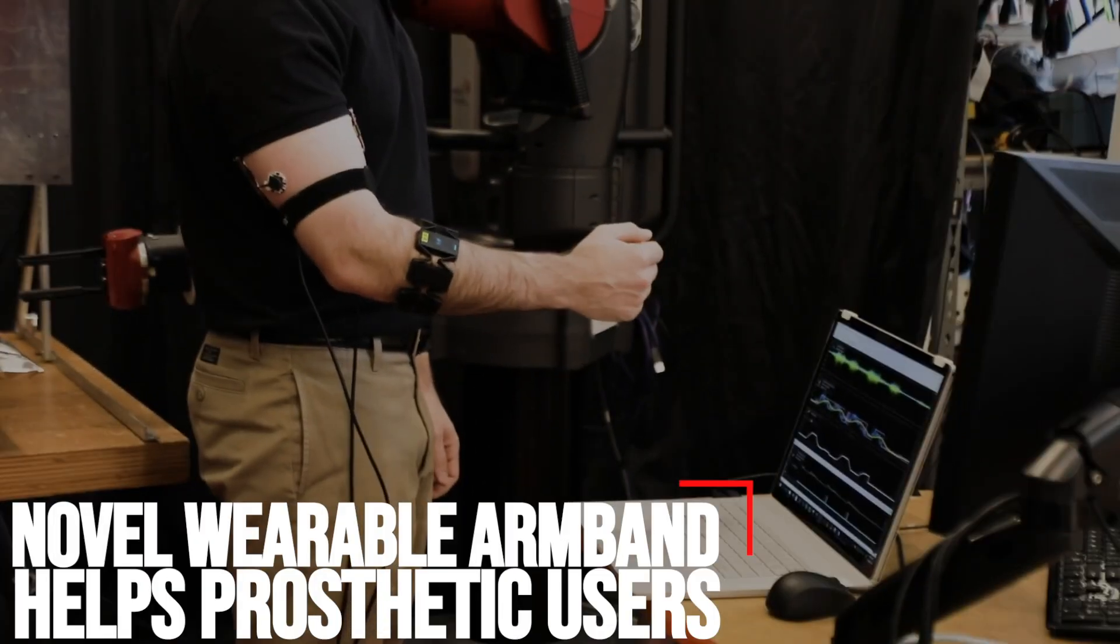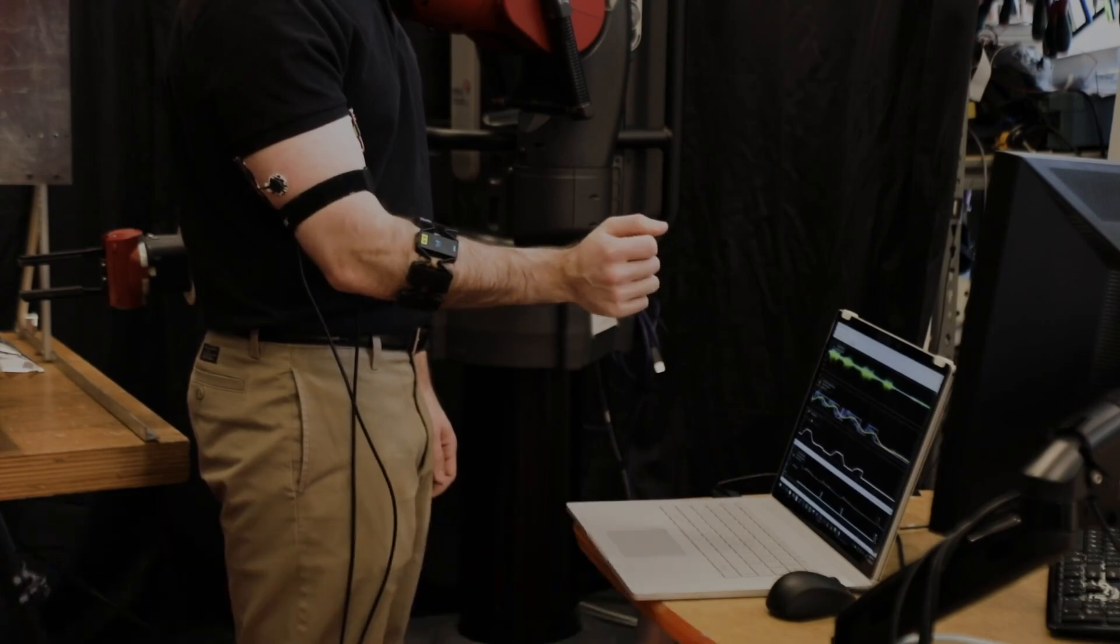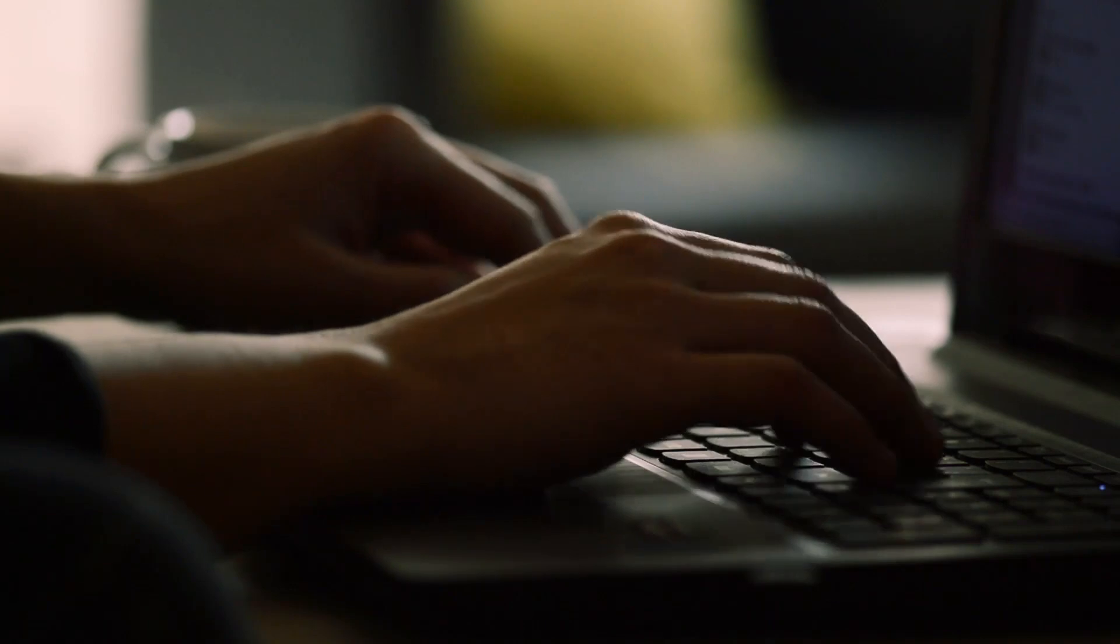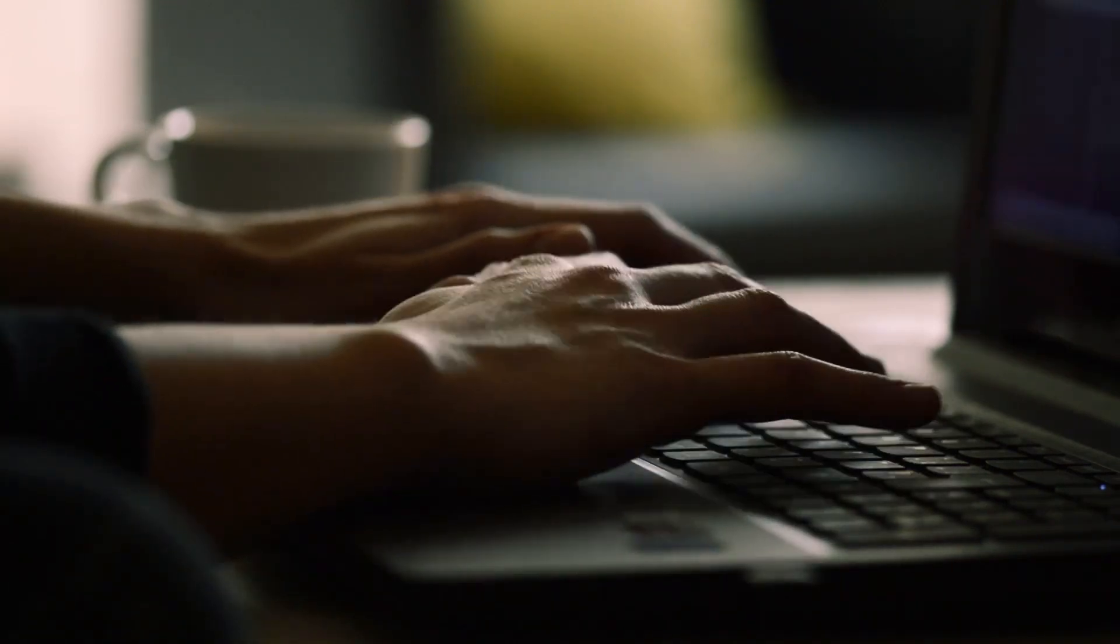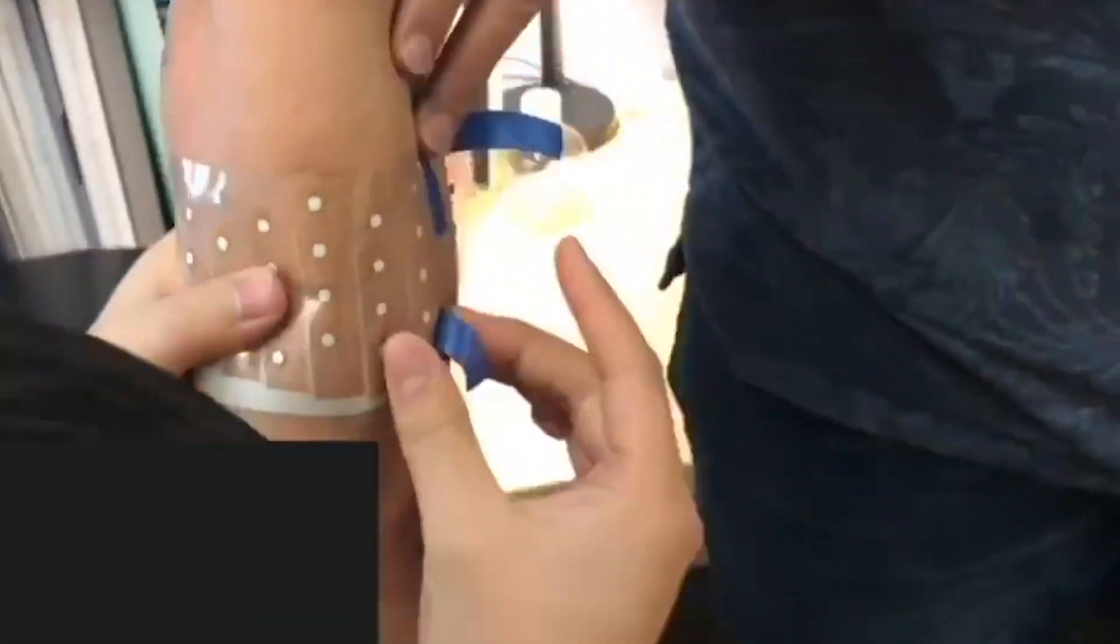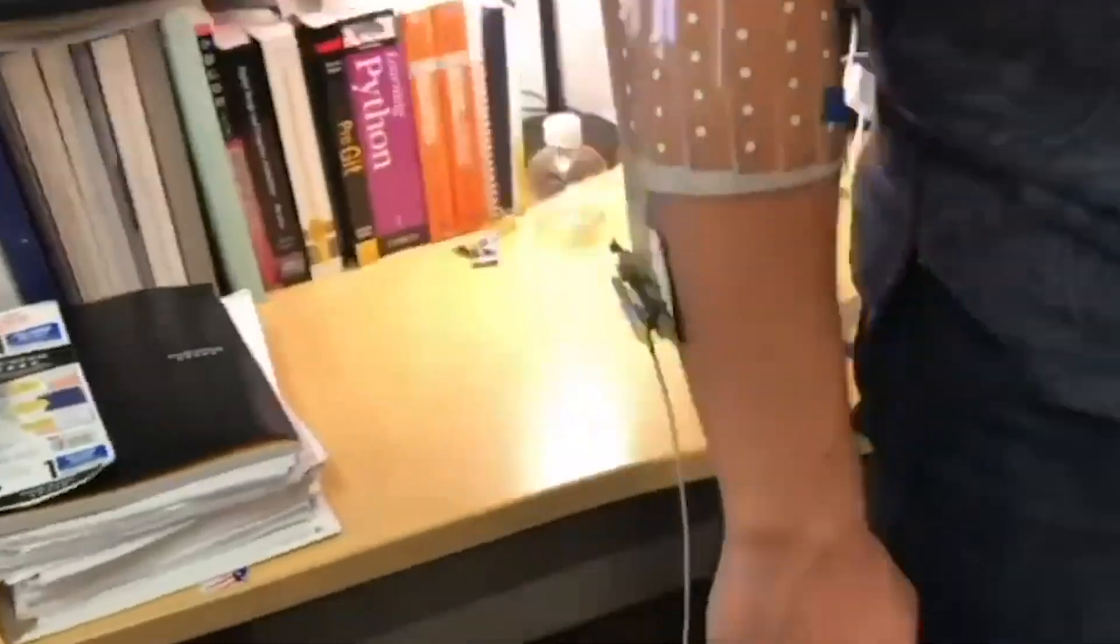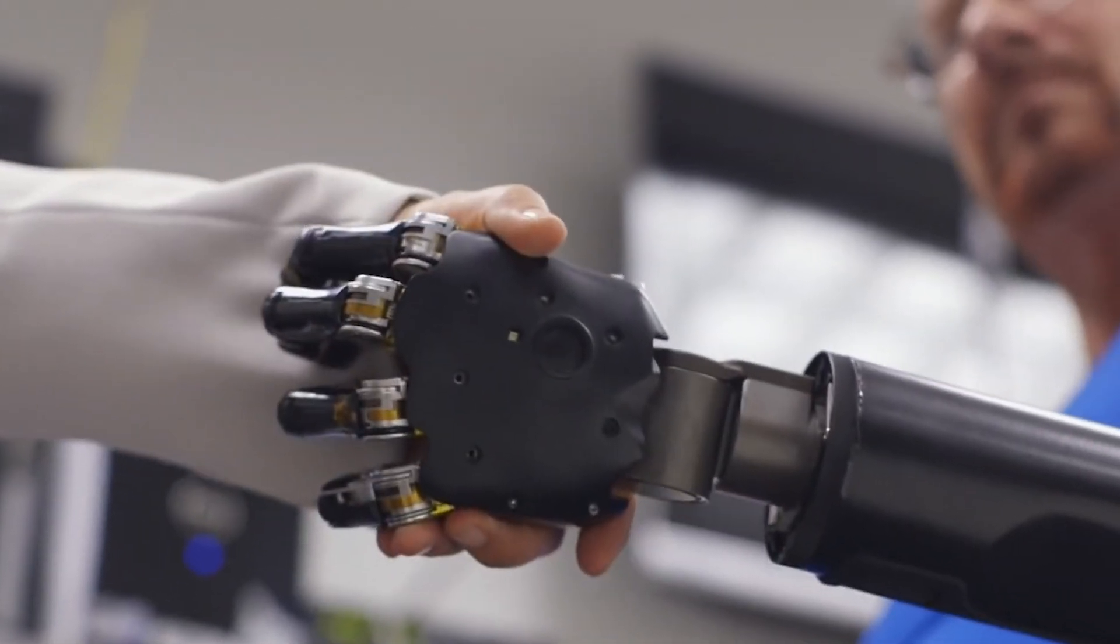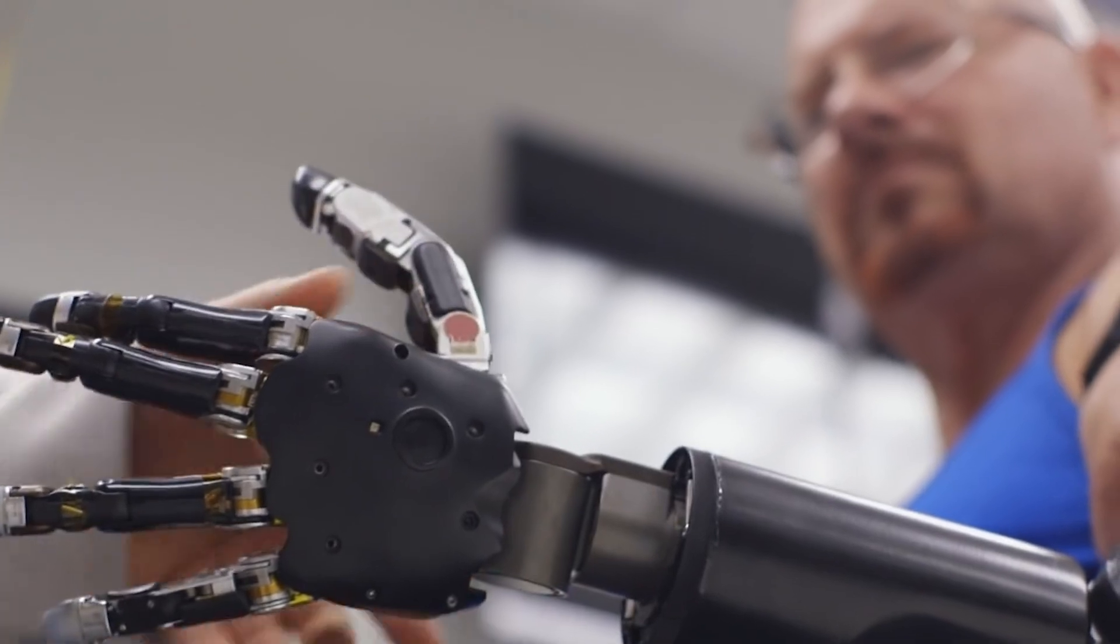Novel wearable armband helps prosthetic users. Typing on a keyboard, pressing buttons on a remote control, or braiding a child's hair has remained elusive for prosthetic hand users. With current myoelectric prosthetic hands, users can only control one grasp function at a time, even though modern artificial hands are mechanically capable of individual control of all five digits.